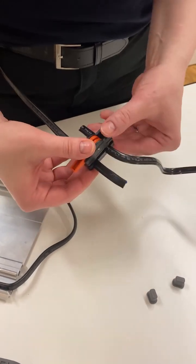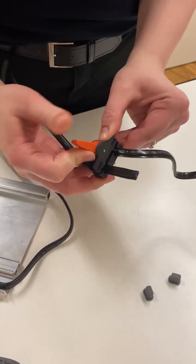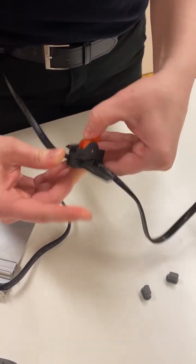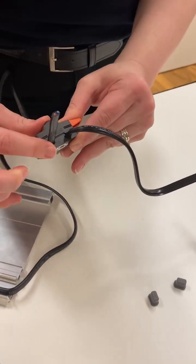Pop it on there, make sure it's sitting center and then we pull this tab across, put a bit of pressure on and that'll actually pierce the cables there.